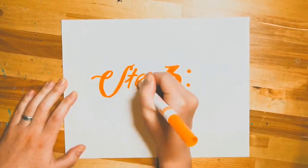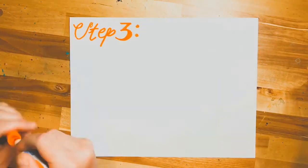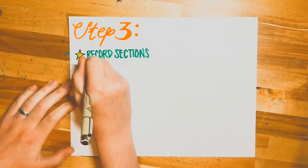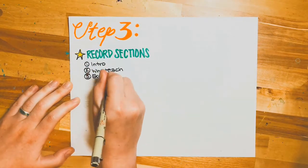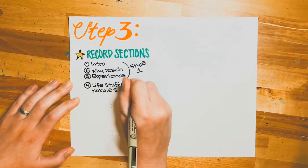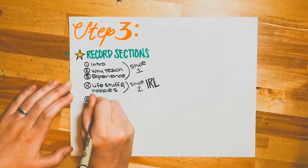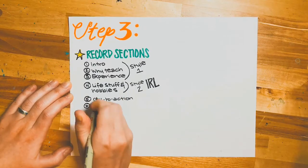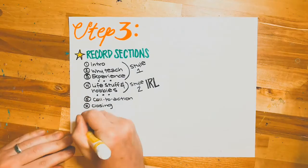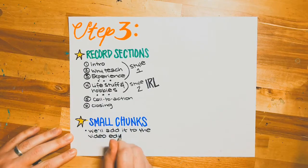Step three: record everything. When I start step three, I record everything in sections. The intro, why I teach, and experience — they're each one of three sections that I put into style one. Then life stuff and hobbies. For my video, I did about four or five little videos for life stuff and hobbies in real life. And then the call to action and closing — that goes back to style one. Everything I do, I record in small chunks because I know I can add it to the video later.